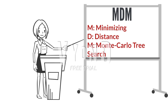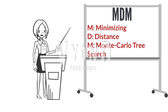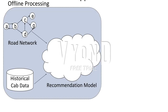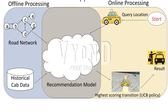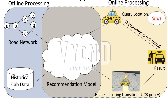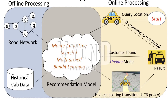Now, let's look at what MDM stands for: Minimizing Distance through Monte Carlo Tree Search. Here is the pipeline of the algorithm. In the offline phase, a recommendation model is learned powered by Monte Carlo Tree Search. Each outgoing segment from a query location is treated as a bandit arm. The route is recommended using the learned model, and any sort of reward is fed back to the model.